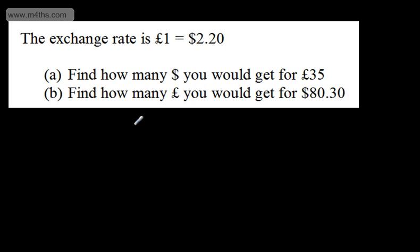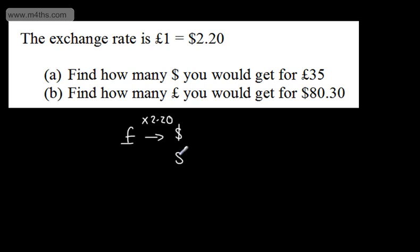The way to look at this is to say if we want to go from pounds to dollars, we're going to multiply by 2.20. If we want to go the other way and convert from dollars to pounds, we're going to do the opposite and divide by 2.20.